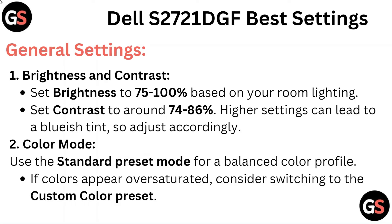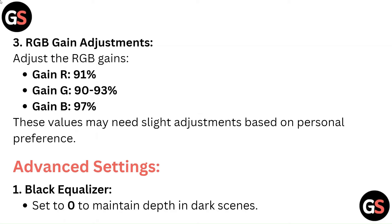If colors appear oversaturated, consider switching to the custom color preset. For RGB Gain Adjustments, adjust the RGB gains: Gain R at 91%, Gain G at 90-93%, and Gain B at 97%. These values may need slight adjustments based on personal preference.